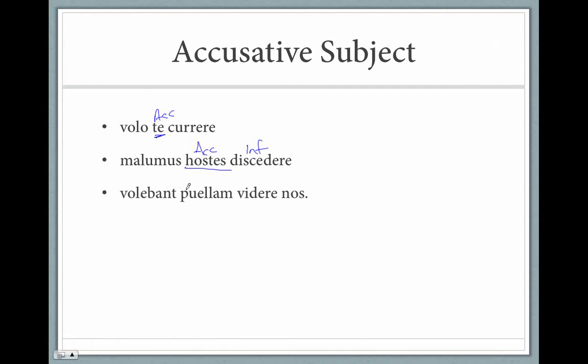Or volebant puellam videre nos. They wanted the girl, here's our accusative subject, to see. And now, nos, another accusative. But this is the direct object of videre. So they wanted the girl to see us.